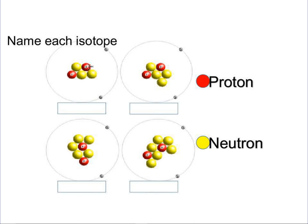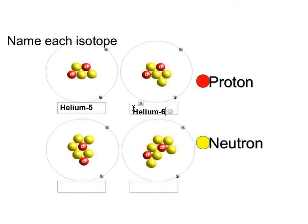The red is the protons and the yellow are the neutrons. In the first picture we have 2 protons, so this is helium. Count up everything in the nucleus — you should have 5 total, so it's helium-5. The next one is still helium with 2 protons: counting gives us 2, 4, 6 — this is helium-6. Still 2 protons in the next one, so helium — count all the circles in the middle: 7, giving helium-7. Last one still has 2 protons — helium — count them all up: 8, so it's helium-8.